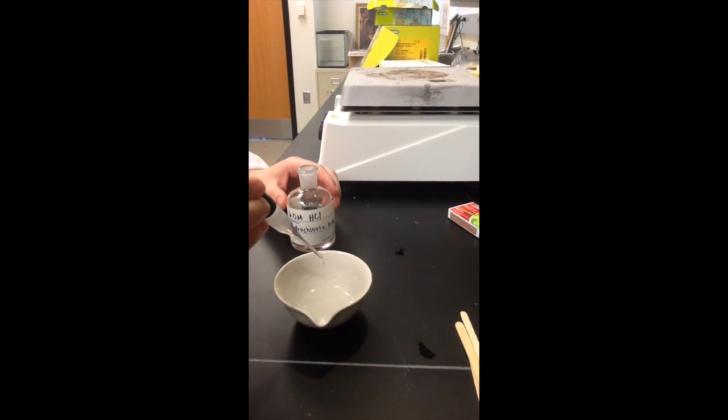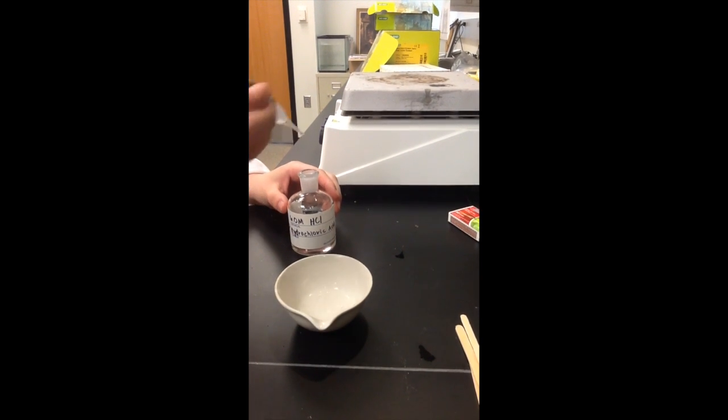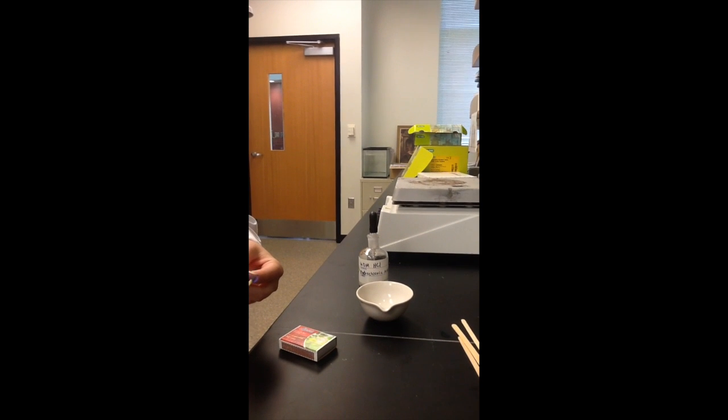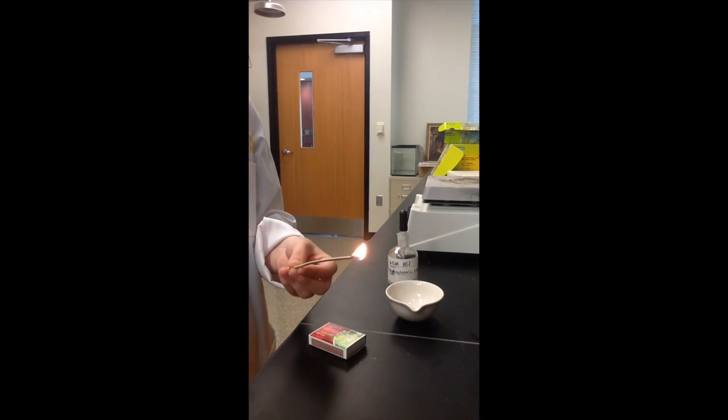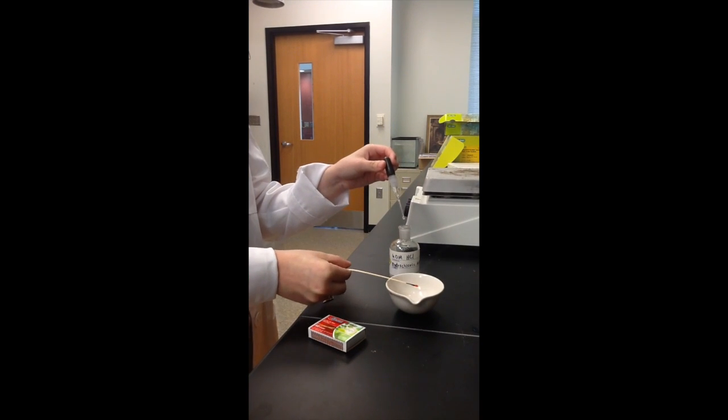Add a few drops of 6 molar HCl to your solution and observe the gas that is formed. Next, place a glowing wooden stick over the solution after adding more HCl and observe what happens.